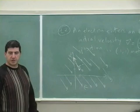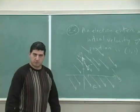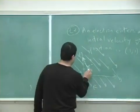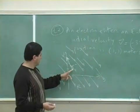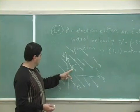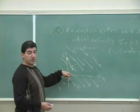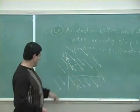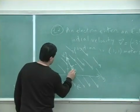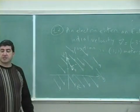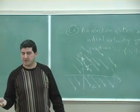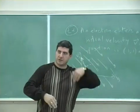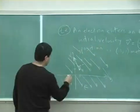So what do you think its path is going to look like? Generally speaking, does it like to go in the same direction as the E or opposite? Opposite. So it likes to go opposite. Eventually, basically, it wants to align itself so that it's perfectly opposite to the E — that's its eventual goal. So I think the path should look something like this.